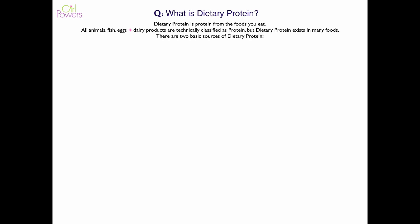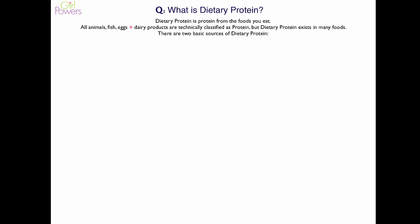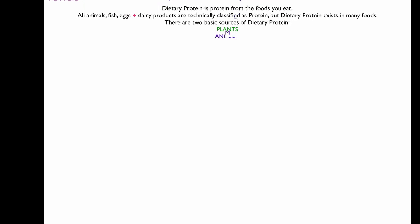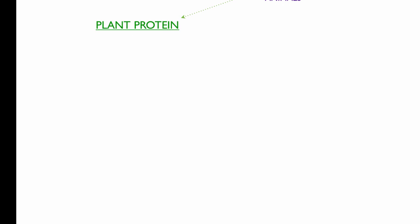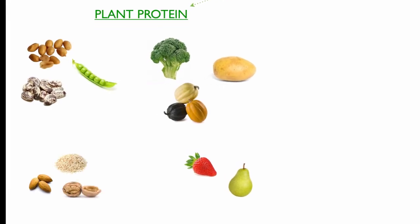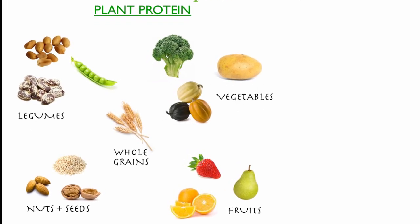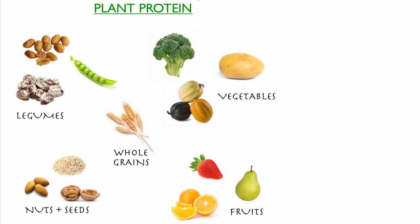There are two basic sources of dietary protein: plants and animals. Plant protein exists in these types of foods: legumes, whole grains, vegetables, nuts and seeds, and fruits.